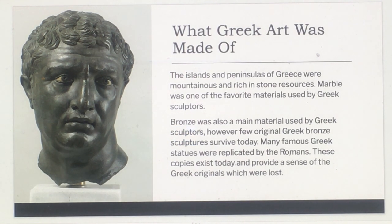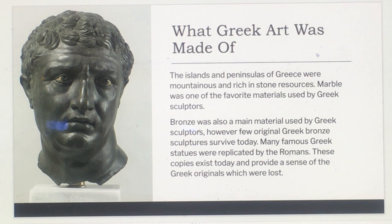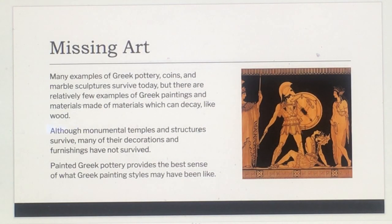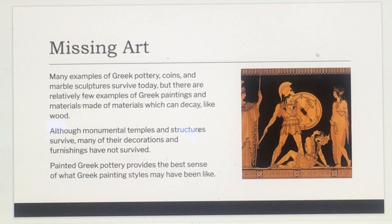The islands and peninsulas of Greece were mountainous and rich in stone resources. Marble was a favorite material of Greek sculptors; bronze was also widely used, though few original Greek bronze sculptures survive today. Many famous Greek statues were replicated by the Romans, and those copies survive today. Many examples of Greek pottery, coins, and marble sculptures survive, but there are relatively few examples of Greek paintings, as many were made of materials that could decay. Painted Greek pottery provides the best sense of what Greek painting styles may have looked like.